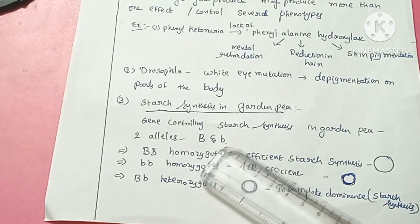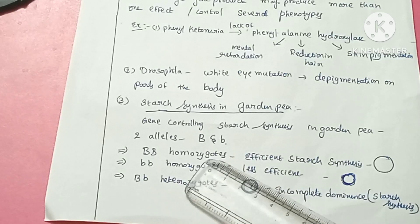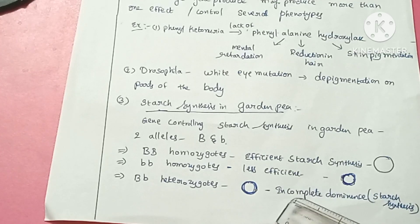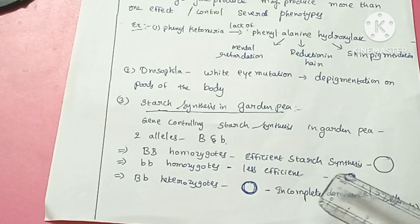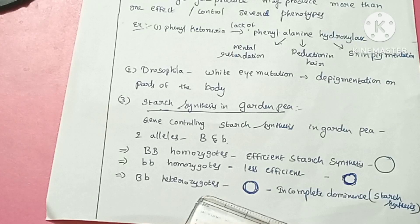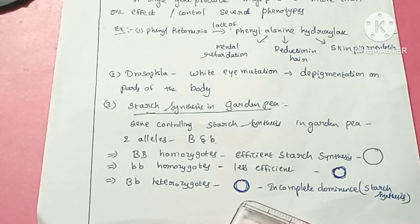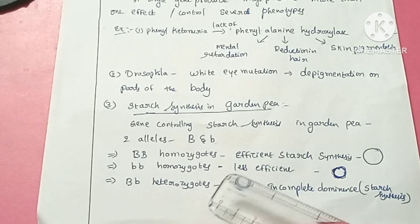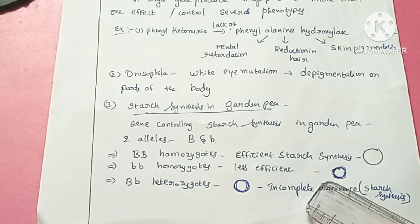The most important example from NCERT is starch synthesis in garden pea. The gene controlling starch synthesis has two alleles: capital B and small b. In the homozygous BB condition, seeds are highly efficient at producing starch — they produce large-sized seeds with a high amount of starch. In the homozygous bb condition, the seeds are less efficient in starch synthesis, are very small in size, contain very little starch, and when matured, their shape changes to a wrinkled shape.